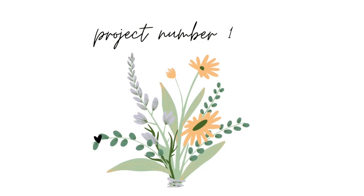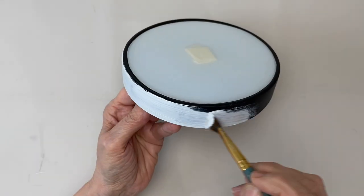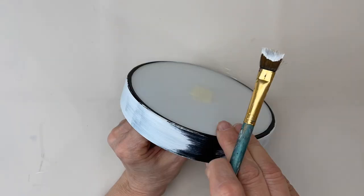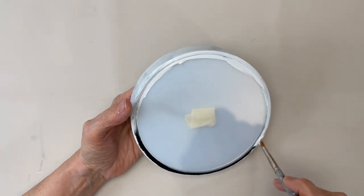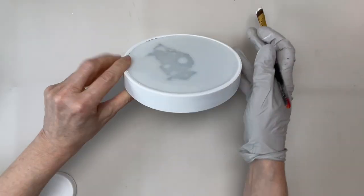First, we're going to recycle a Dollar Tree mirror using tumbling tower blocks and some paint. Here you can see I'm changing the color from black to white with some chalk paint and then applying some Mod Podge to seal it.